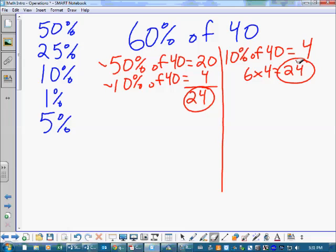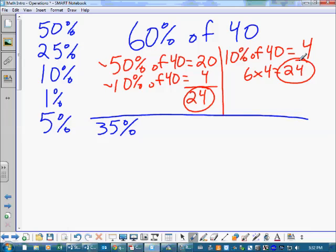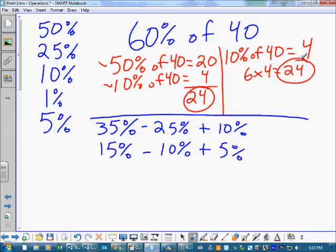So the idea now is that you're using combinations to figure out these different percents. So you could then... I'm not going to go through all these, but what about 35%? How would you do that one? Well, that's 25% plus a 10%. Piece of cake. What about 15%? That's a 10% and a 5% together.